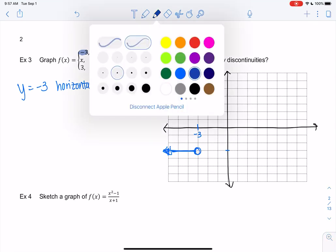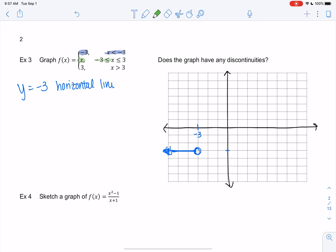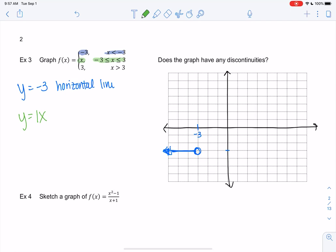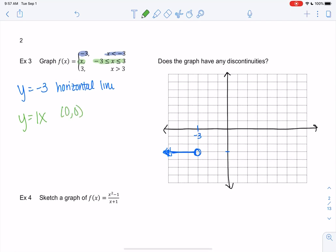Next one: in between negative 3 and 3 we get x. So x is a line, right? It could be the same as 1x. It means we start at (0,0) and it's that nice line just right through the middle, up 1 over 1, and draw the whole line, trying to make it as straight as possible.